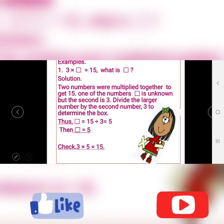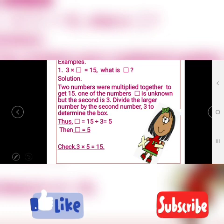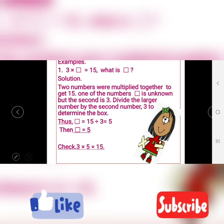How then do you get your unknown number? If you know your multiplication table by heart, you know 3 multiplied by something gives 15. If you don't know, you divide the larger number by the second number, 3. Your larger number is always the answer after the equals sign, which is 15. So 15 divided by 3 equals 5.